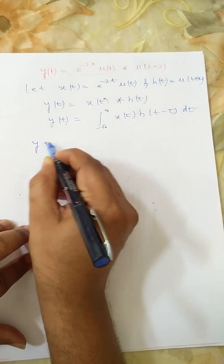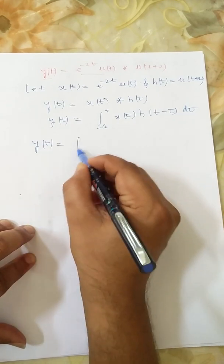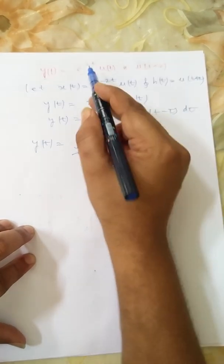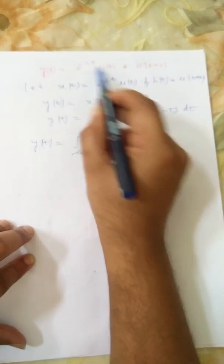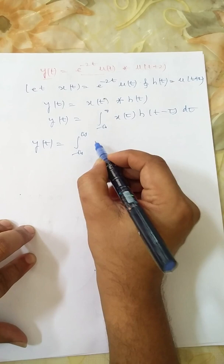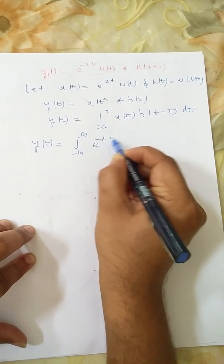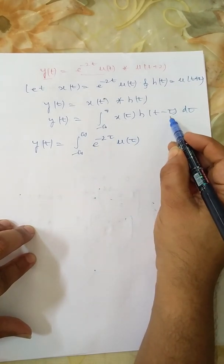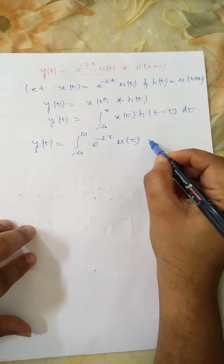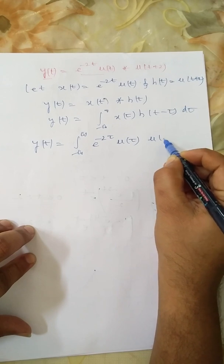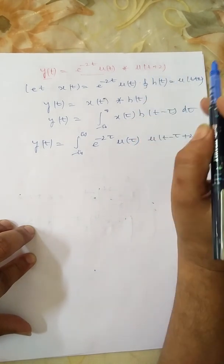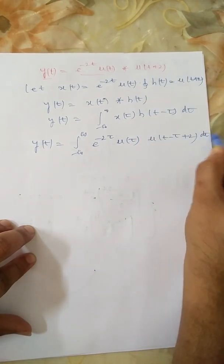That is, y(t) = integral from minus infinity to plus infinity of x(τ) = e^(-2τ) · u(τ), and h(t − τ) = u(t − τ + 2), where t is replaced by t − τ, integrated with respect to dτ.